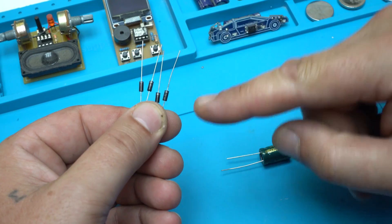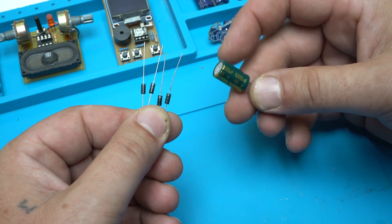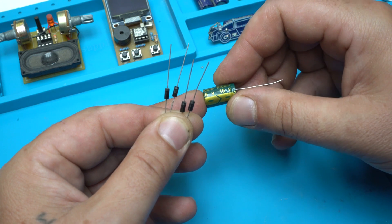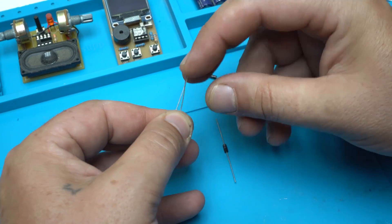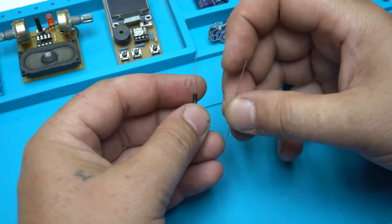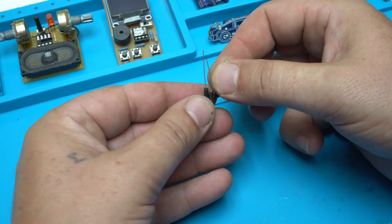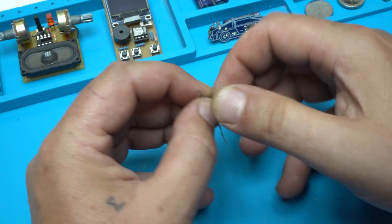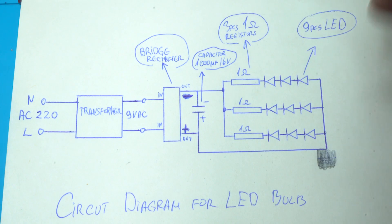Out of four diodes, 1N4007, and one electrolytic capacitor, 1000 microfarads at 16 volts. Let me explain the circuit diagram for making a homemade LED bulb.